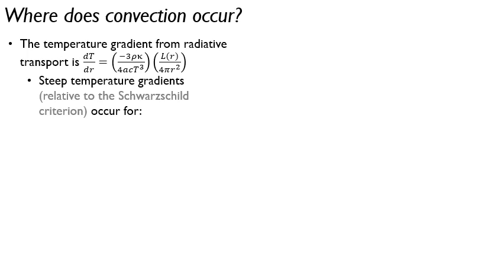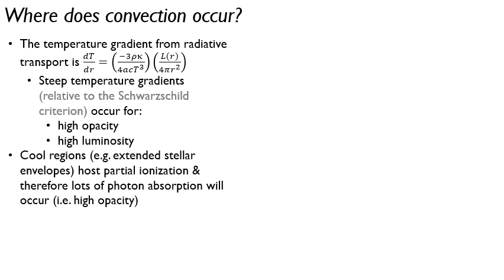Convection is going to occur when your temperature gradient is steep enough relative to the Schwarzschild criterion that we covered in the quick notes on convection. So it's going to occur when you either have a high opacity, so this first term is large, or you have a high luminosity. If both are large, then that would cause convection too. But you only need one of these, a high opacity or a high luminosity, and that'll cause convection to happen.